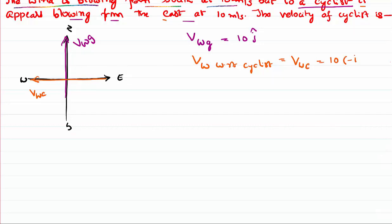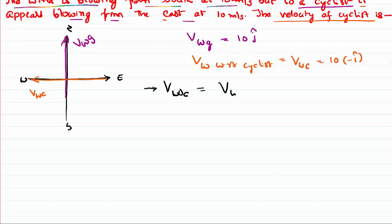We want to calculate the velocity of the cyclist with respect to the ground. We use the relative velocity relation: velocity of wind with respect to cyclist equals velocity of wind with respect to ground plus velocity of ground with respect to cyclist. We use ground as the intermediate reference, as done in previous problems.